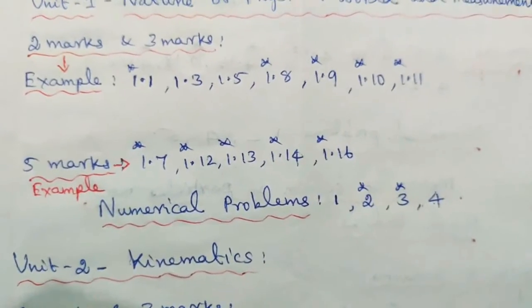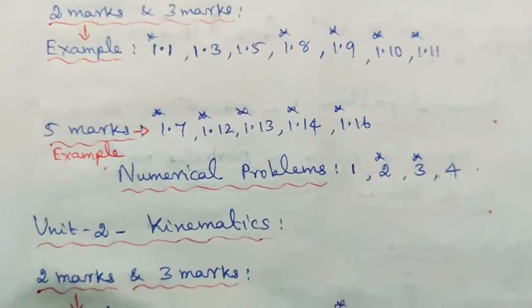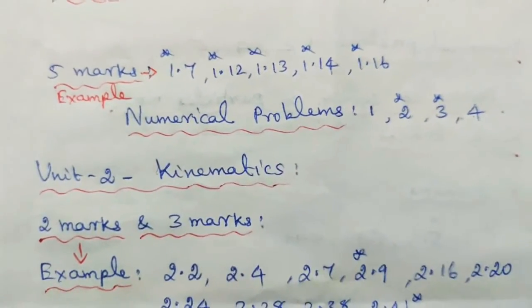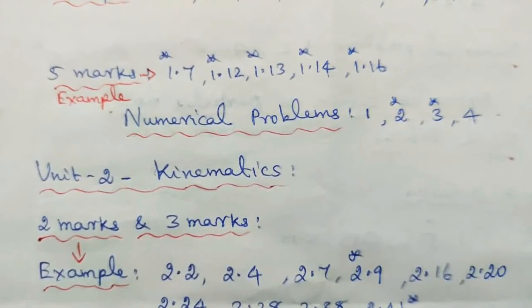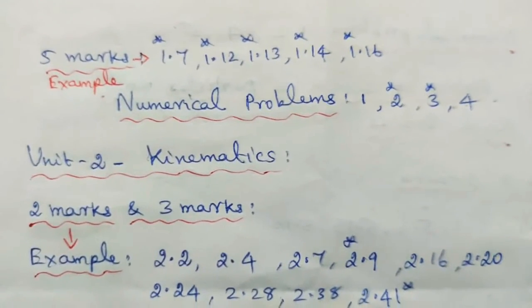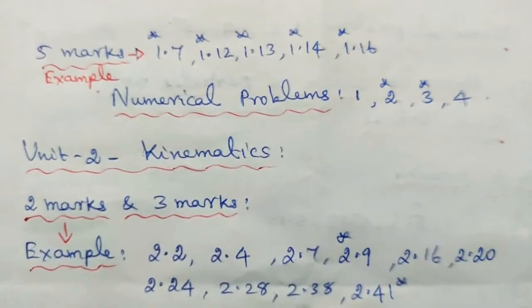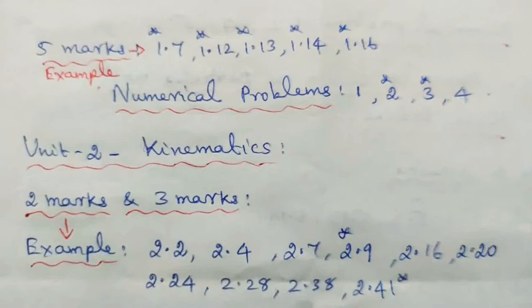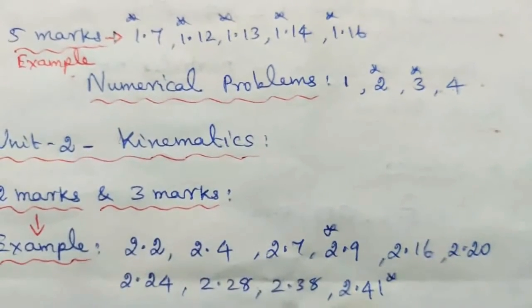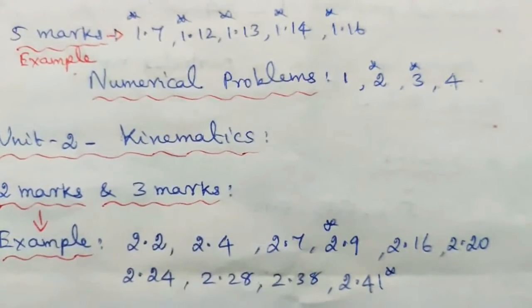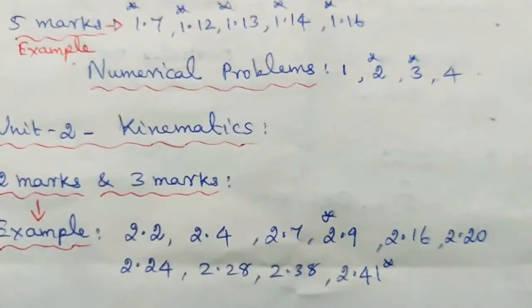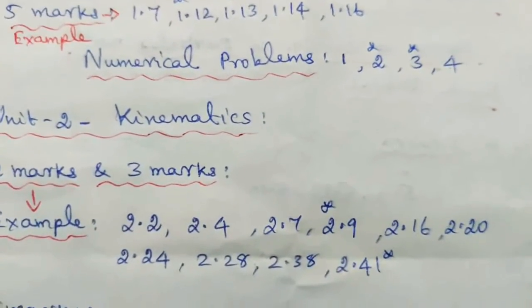Unit 2: Kinematics — 2 marks and 3 marks. Example problems: 2.2, 2.4, 2.7, 2.9, 2.16, 2.20, 2.24, 2.28, 2.38, and 2.41.